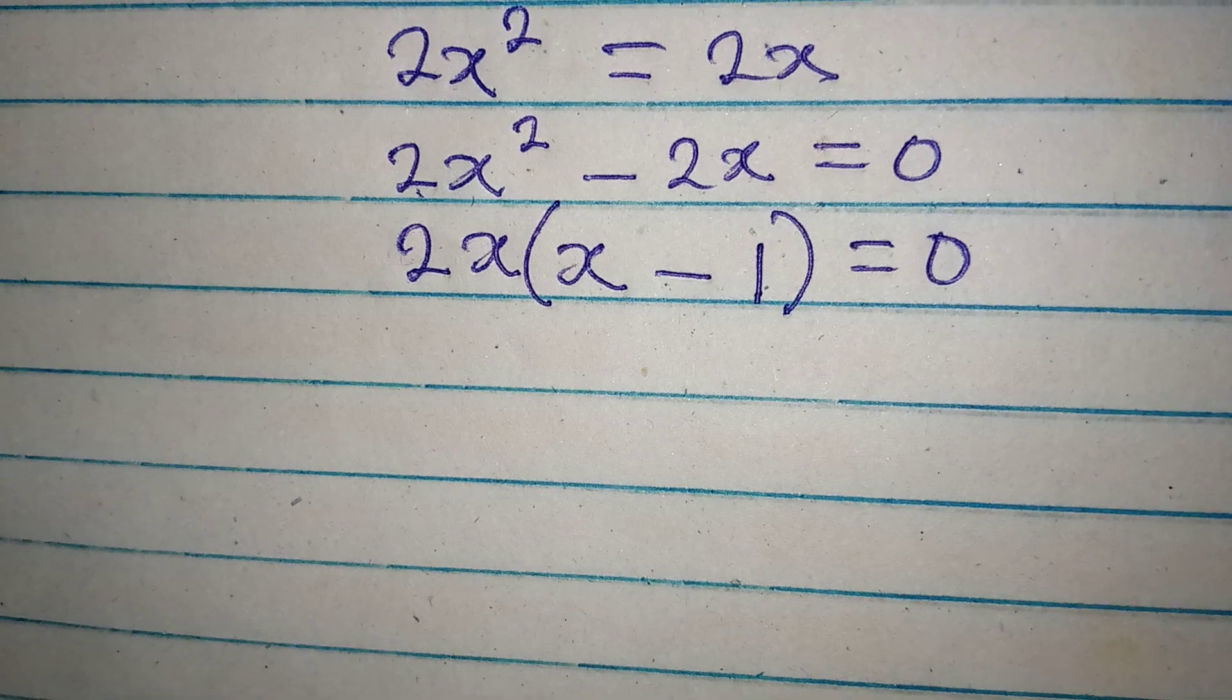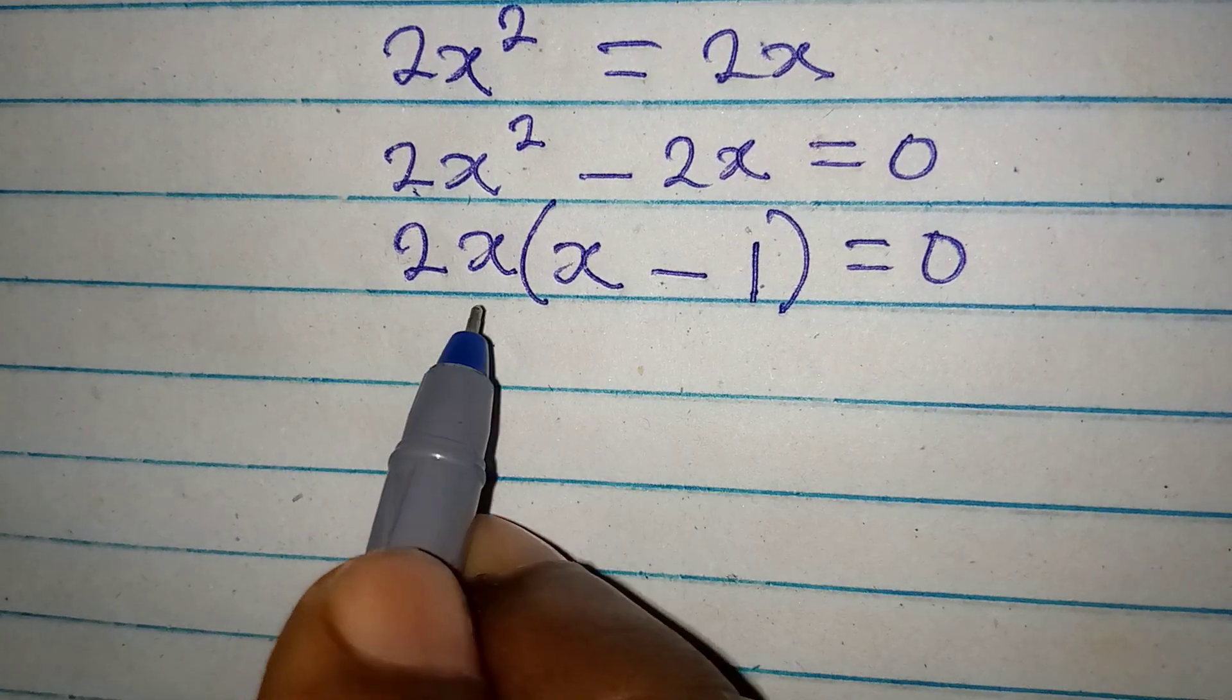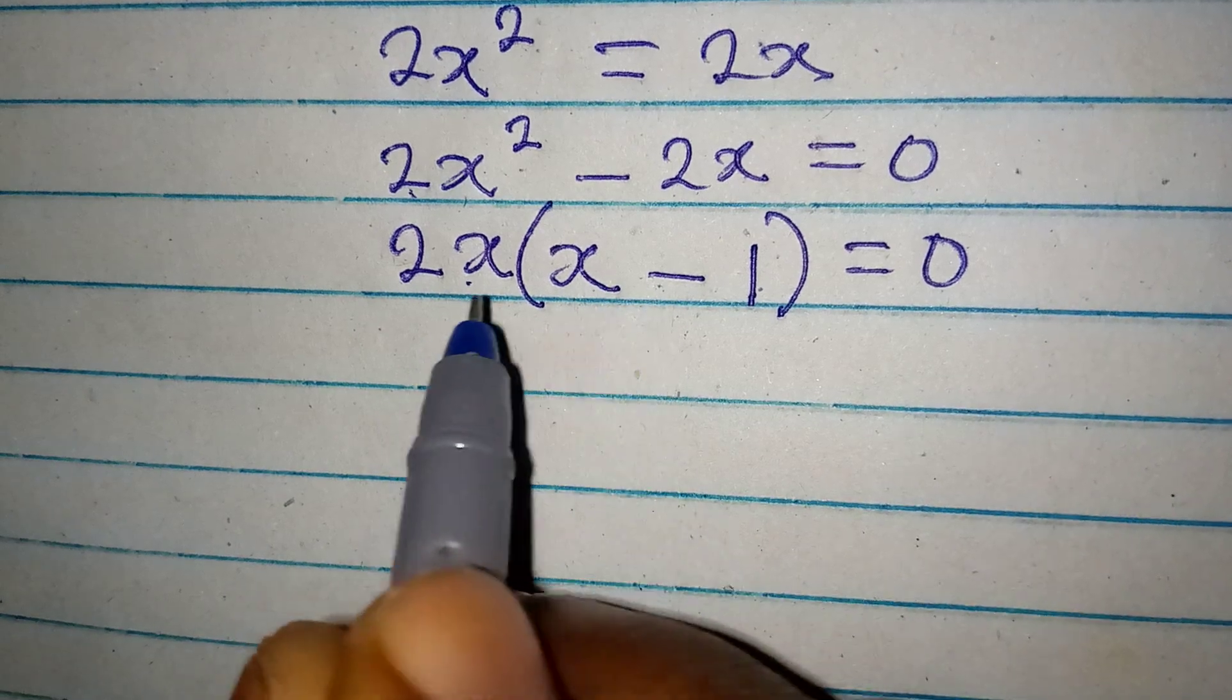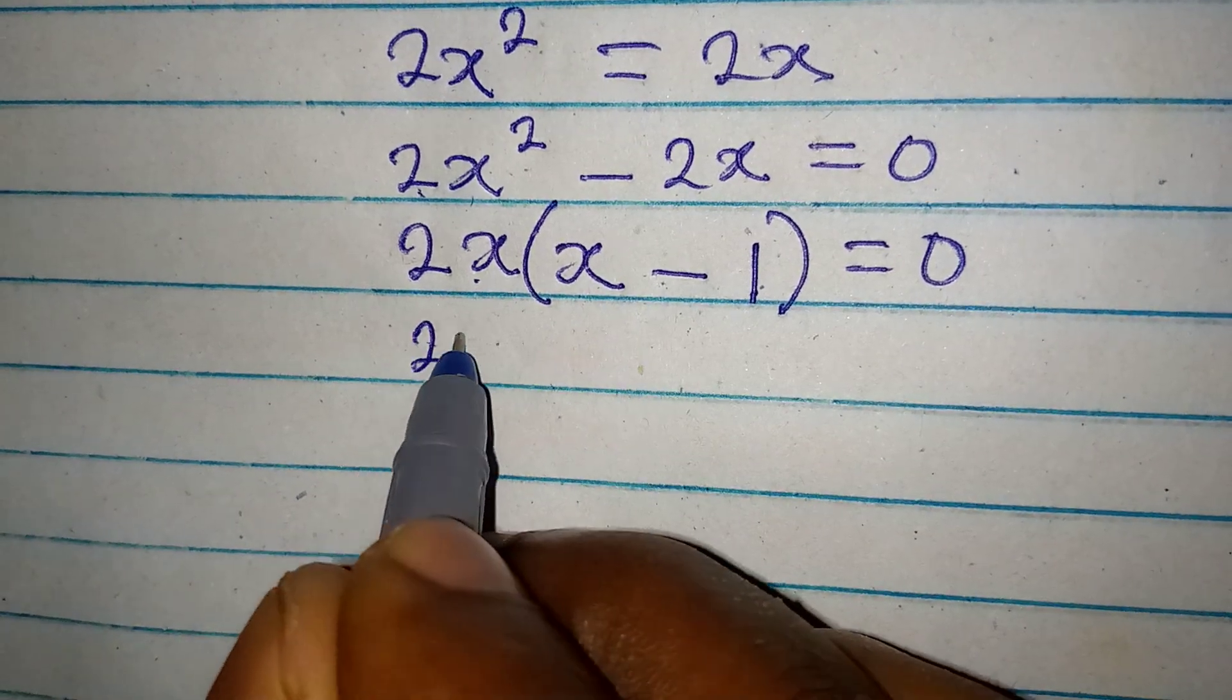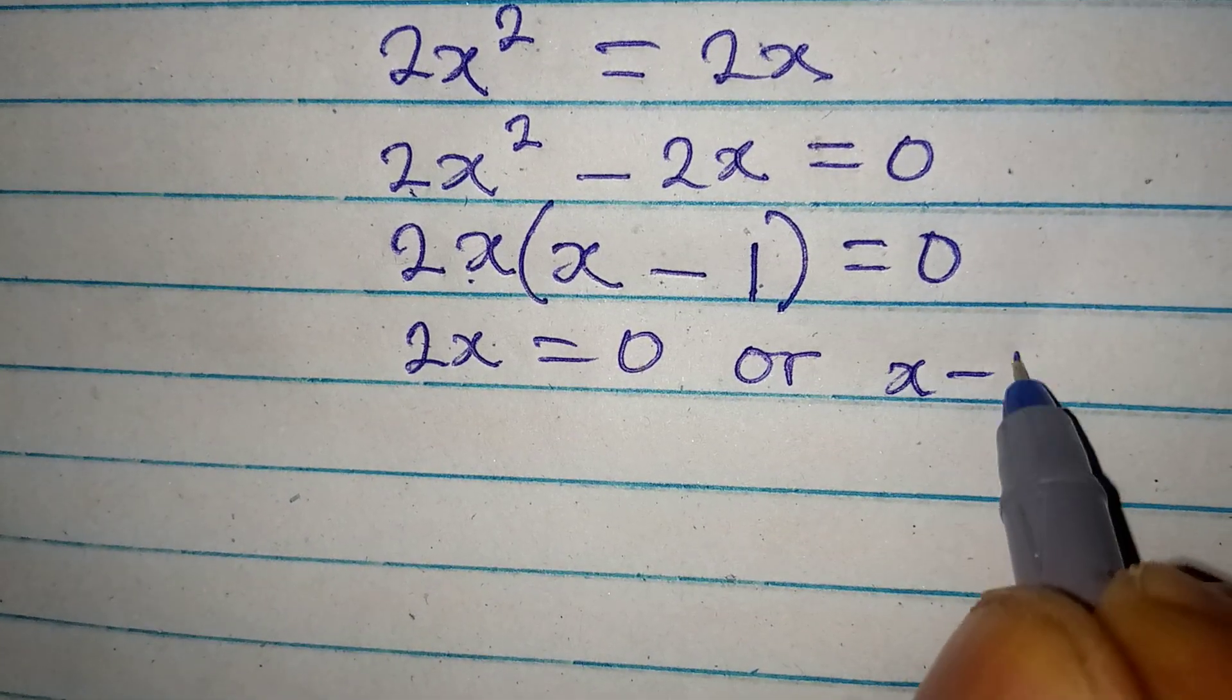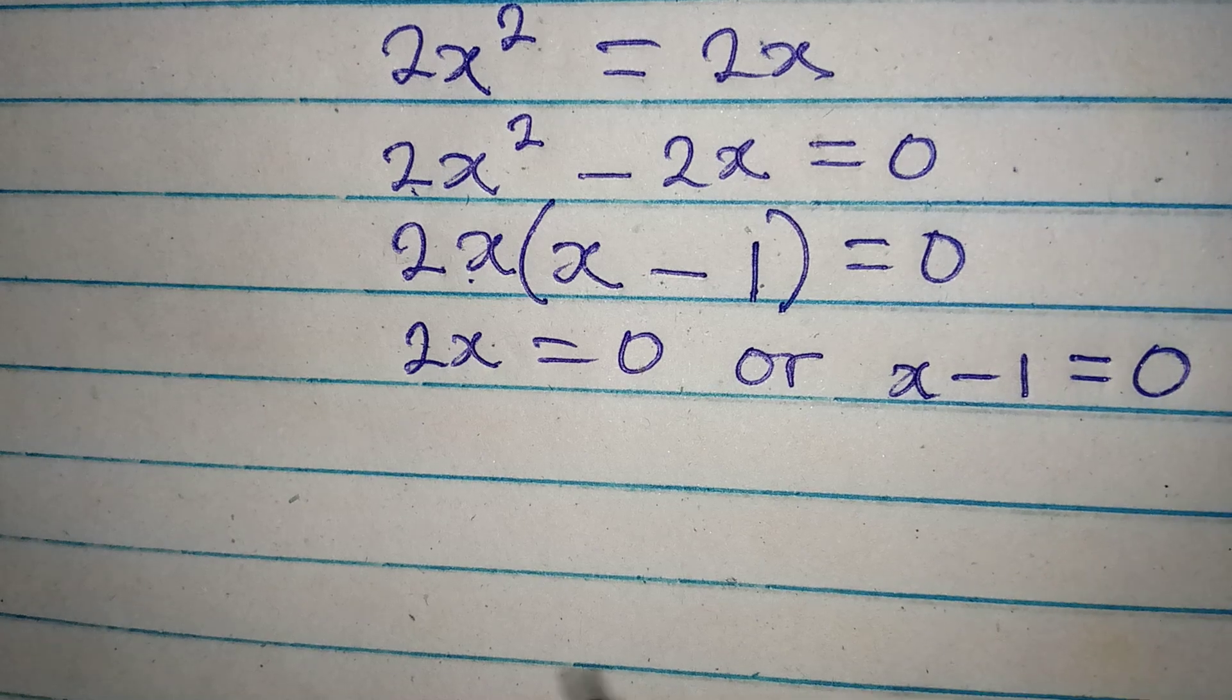From here we can now use zero product property since we are multiplying these two to get 0. 2x is either equal to 0 or x minus 1 is equal to 0.